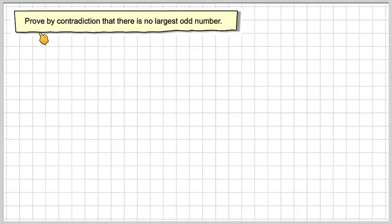Hi, another video for me. So it says, prove by contradiction that there is no largest odd number.